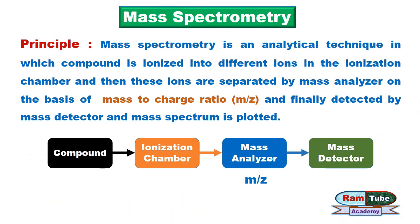These ions are separated by the mass analyzer on the basis of mass-to-charge ratio, and finally they are detected by the mass detector and plotted as the mass spectrum.